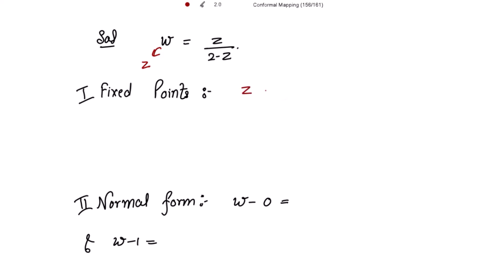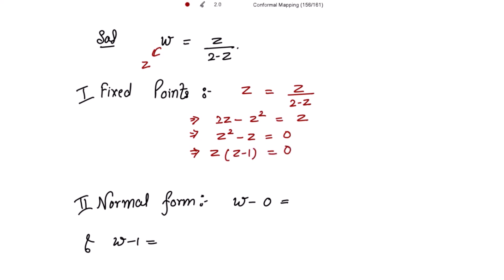Setting w = z gives z = z/(2 - z). Cross-multiplying, we get 2z - z² = z, which implies z² - z = 0. Taking z common, we get z(z - 1) = 0, so z = 0 and z = 1 are the fixed points of this given transformation.